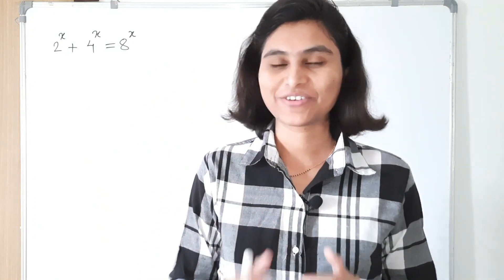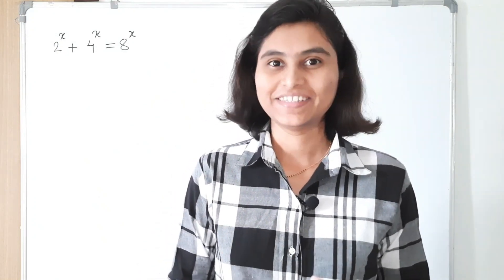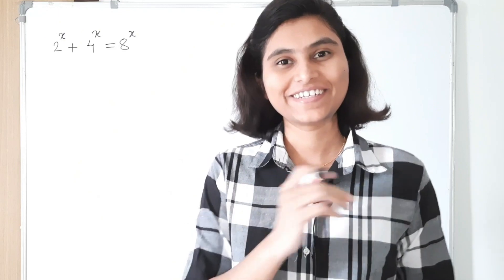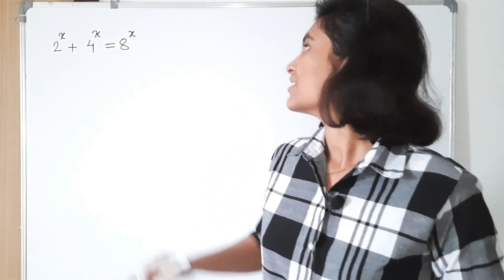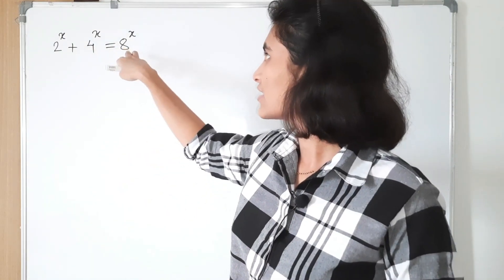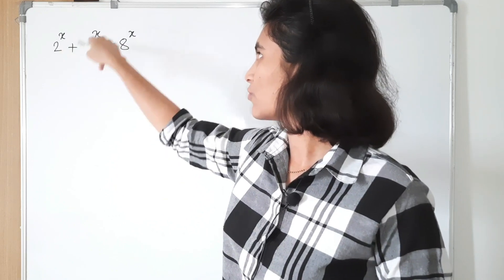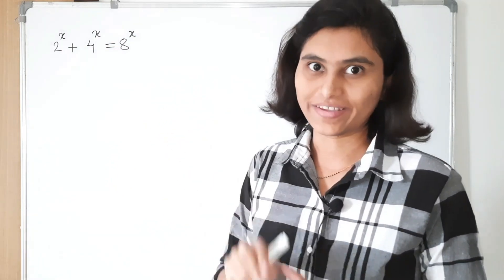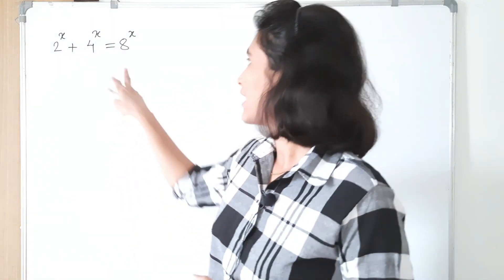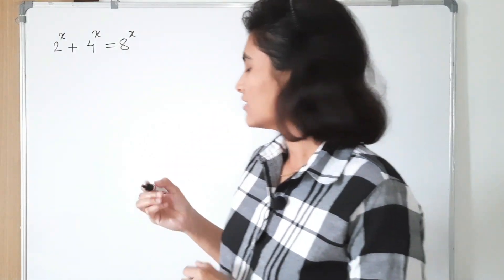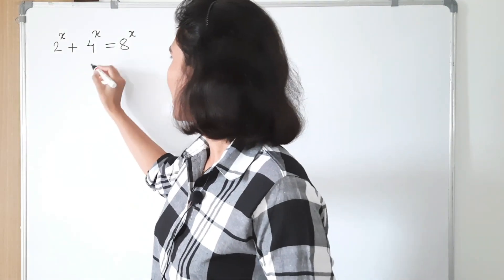Hey everyone, welcome back to another interesting video. In this video we are going to solve an interesting problem: find the values of x such that 2 raised to x plus 4 raised to x is equal to 8 raised to x. If we look at this equation, we can write 4 raised to x as 2 squared raised to x.